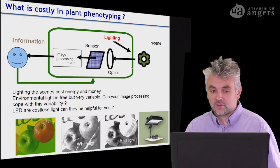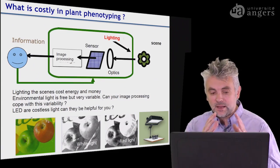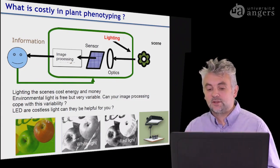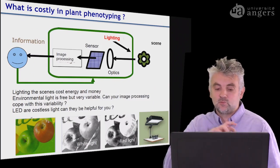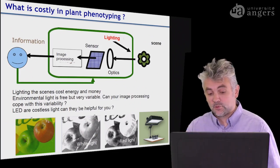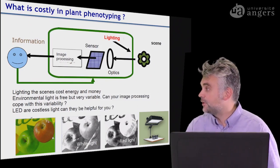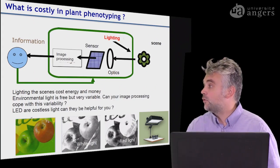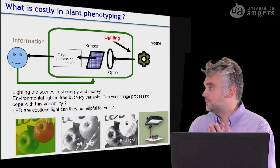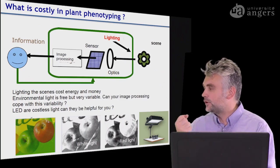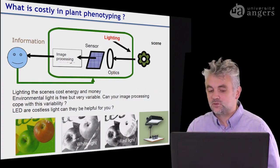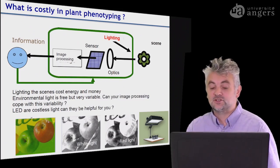A second element in the cost of the phenotyping system is the light itself. Putting light in the scene costs energy and money. You can use free sunlight, but it varies a lot during the day in a greenhouse and your image processing system may not cope with that variability. A nice alternative is to use LEDs, which are low-cost lights. For example, if you are only interested in counting apples depending on whether they are green or red, using white light with grey level images makes contrast very difficult, while using red light gives very high contrast even in grey level. So if you know what you are looking for, you can select the light smartly, decrease the price of your camera, and use grey level images instead of colour.